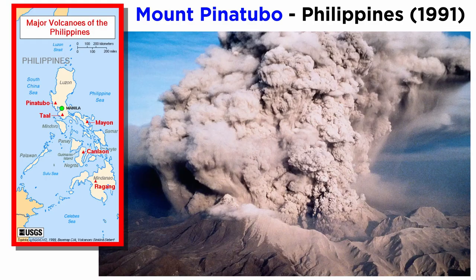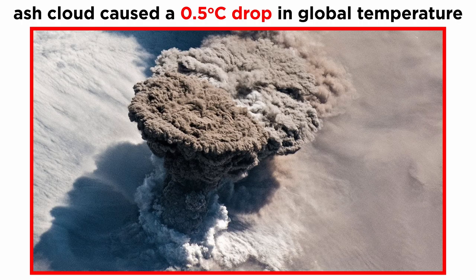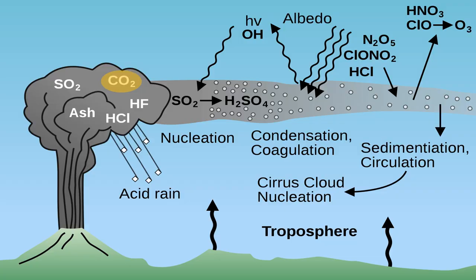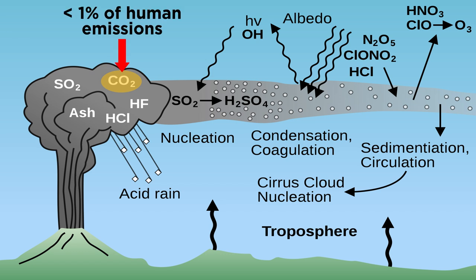In 1991, when Mount Pinatubo erupted in the Philippines, it caused a 0.5 degrees Celsius drop in global temperature. This cataclysmic eruption was the second largest volcanic eruption of the 20th century. Although volcanoes also emit carbon dioxide, a prominent greenhouse gas in our atmosphere, the average emissions are less than 1% of those from current human emissions. Thus volcanoes cannot be blamed for the current rise in temperatures.